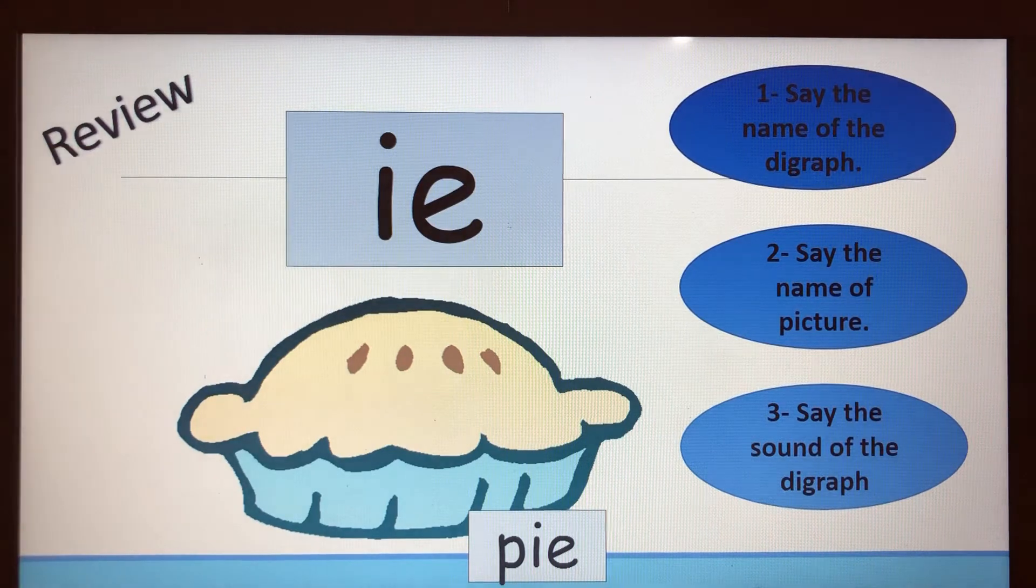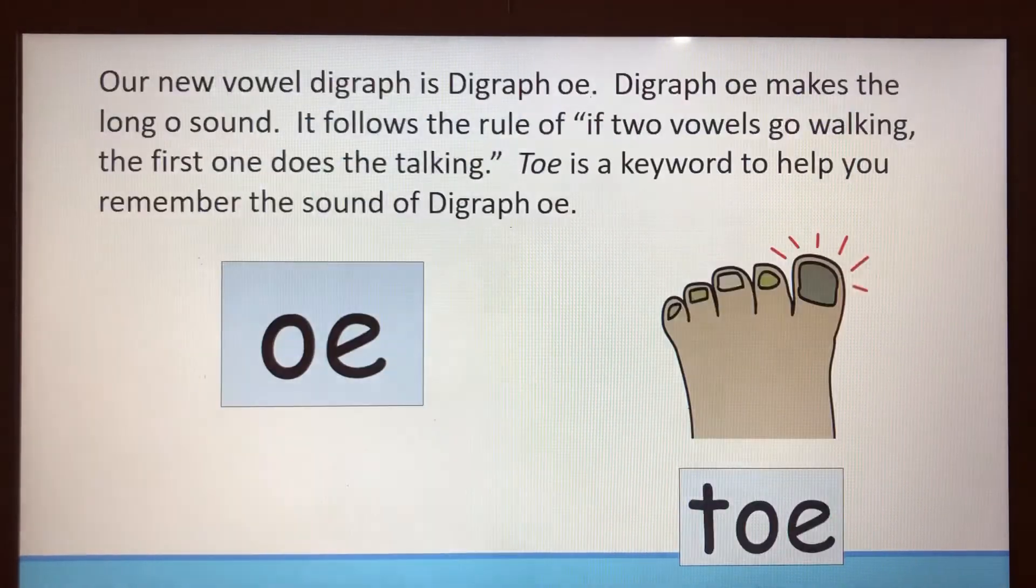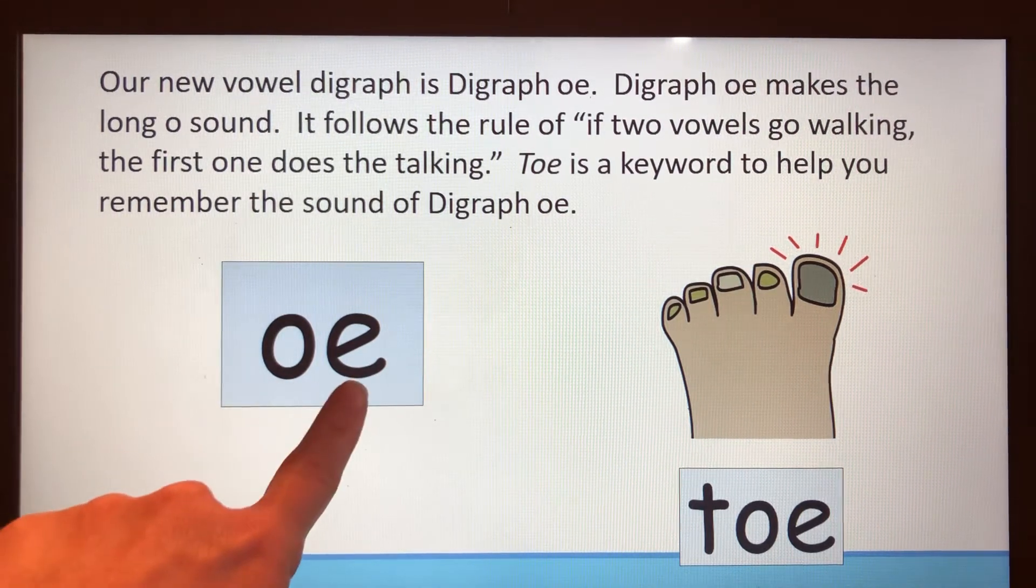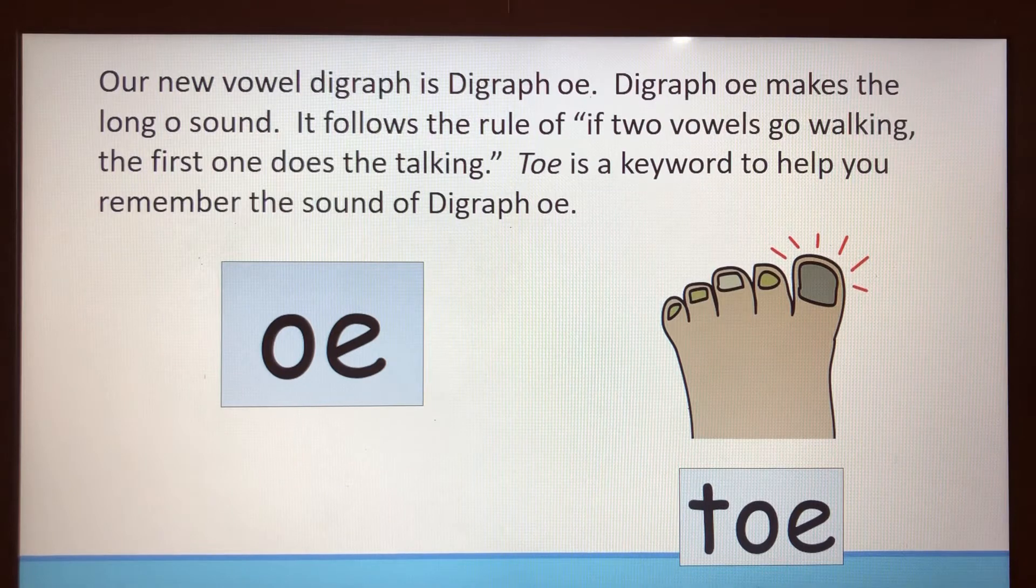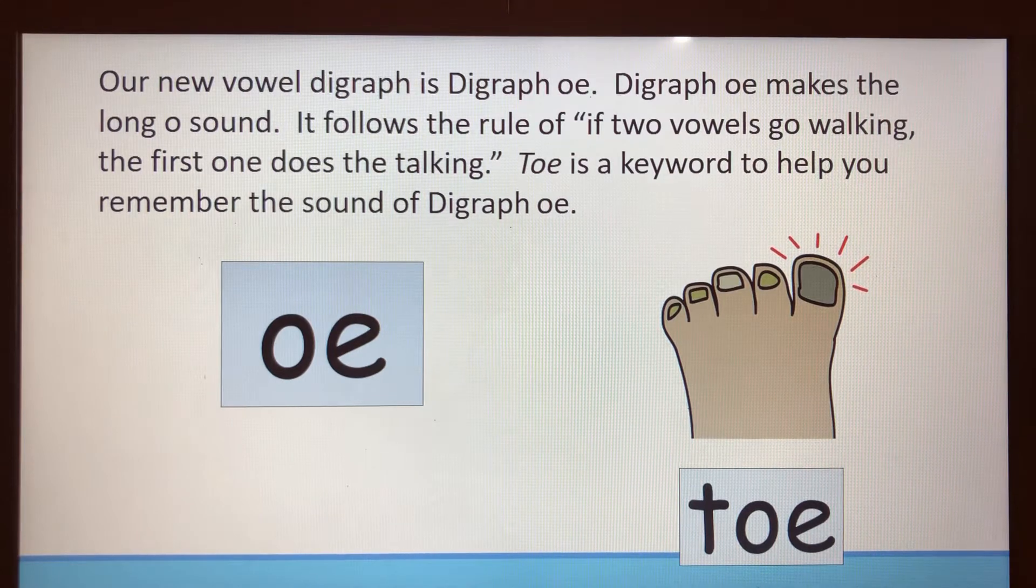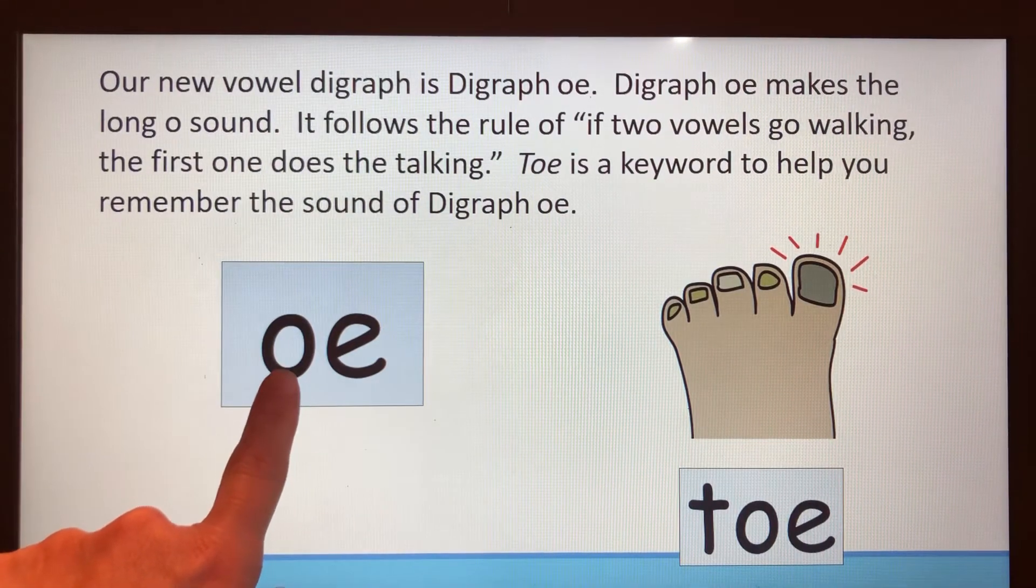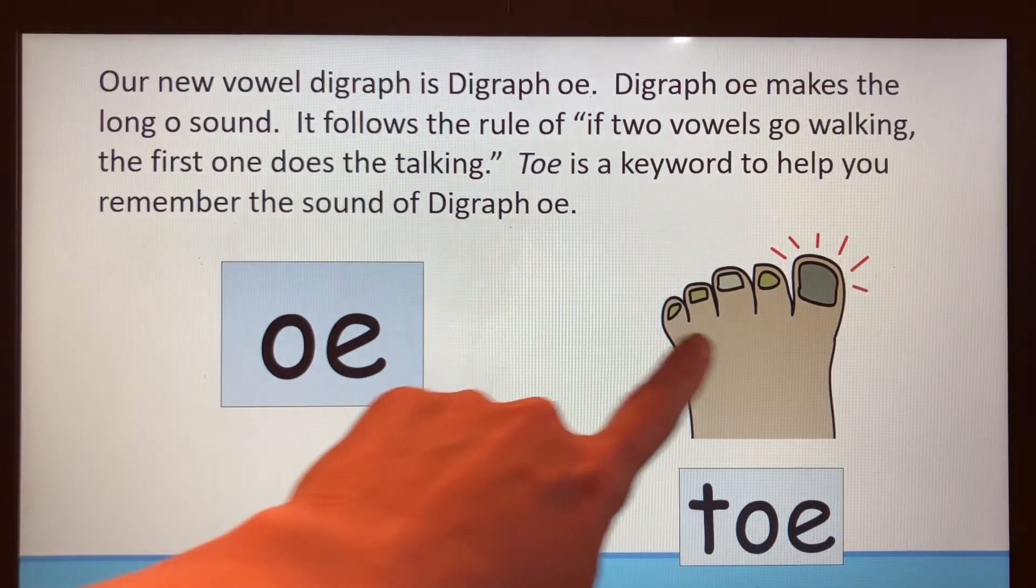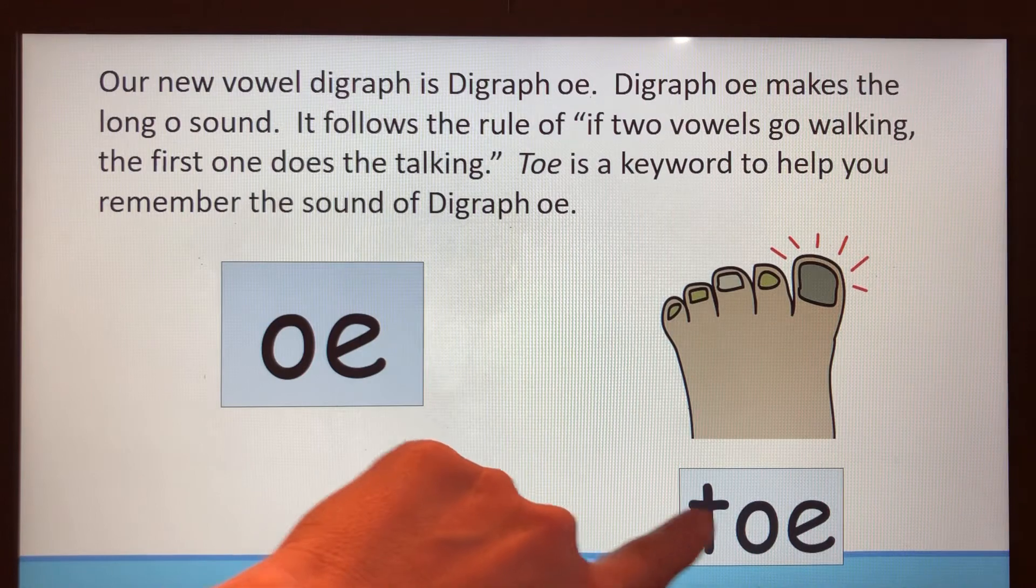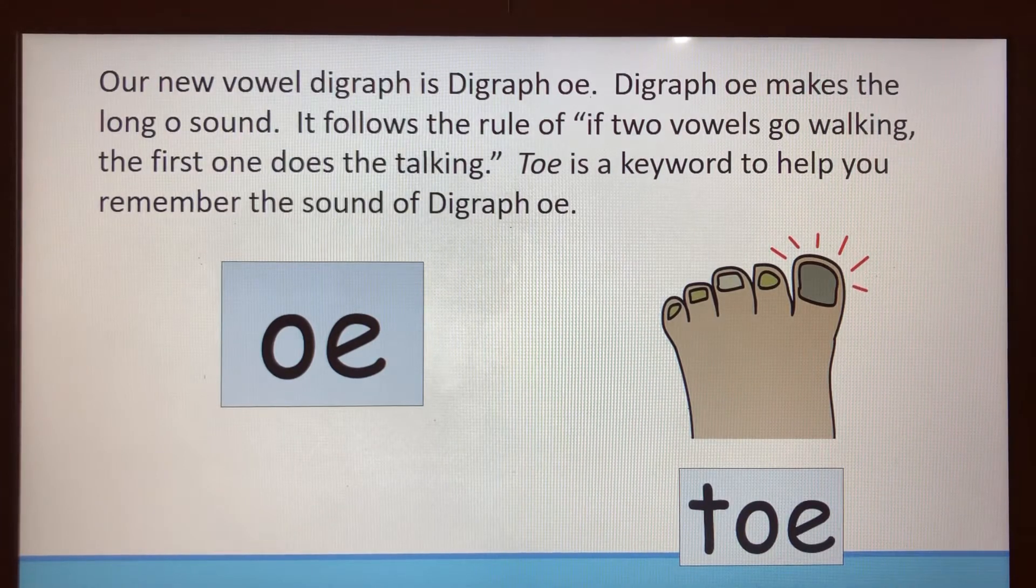Now we're to our new digraph. Our new vowel digraph is digraph OE. Digraph OE makes the long O sound: O. It follows the rule of if two vowels go walking, the first one does the talking. Toe is a keyword to help you remember the sound of digraph OE. Toe is spelled T-O-E. You hear the O sound in the word toe? Yes, I do too.